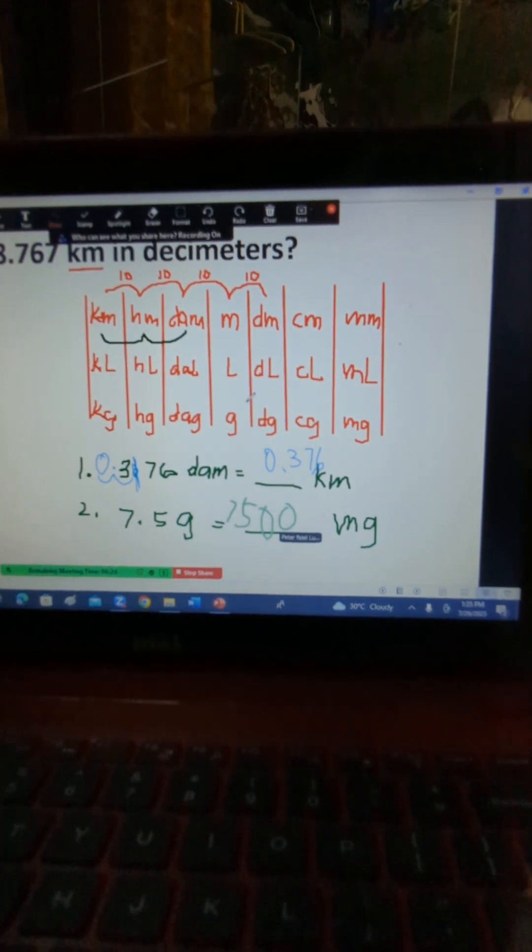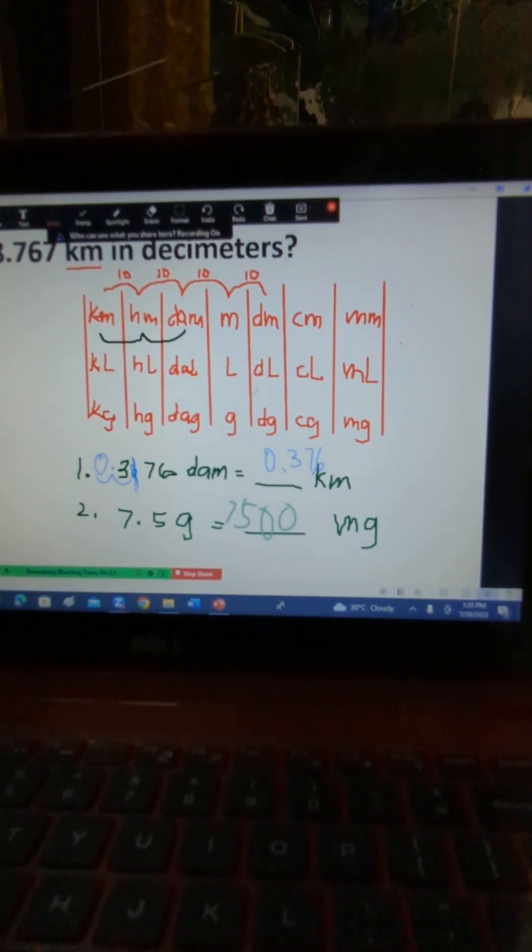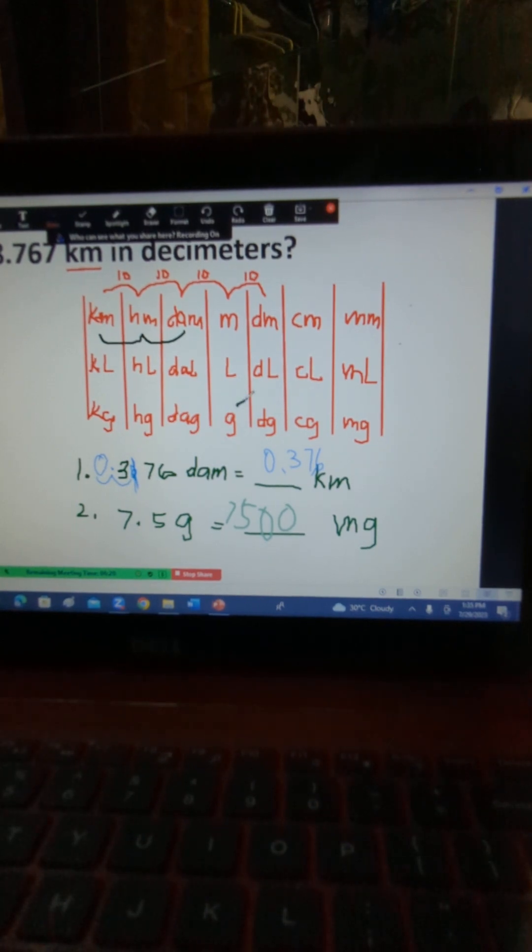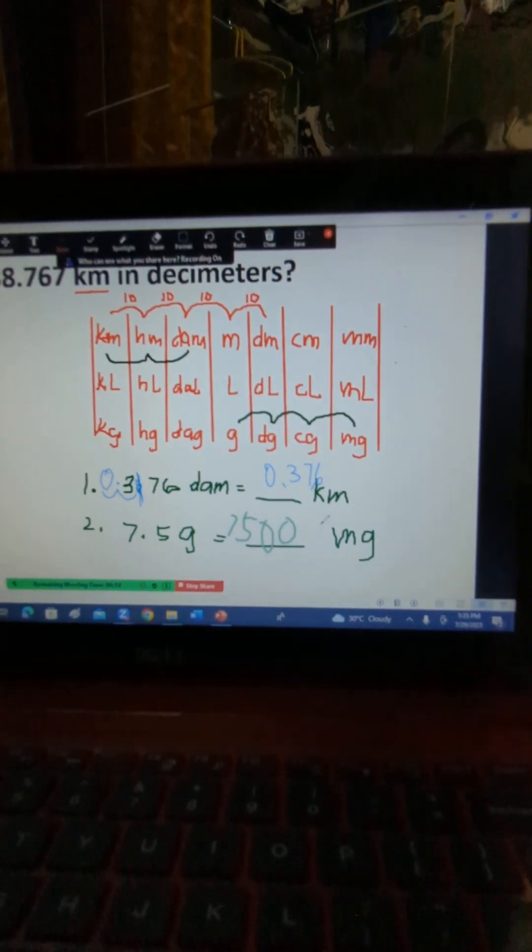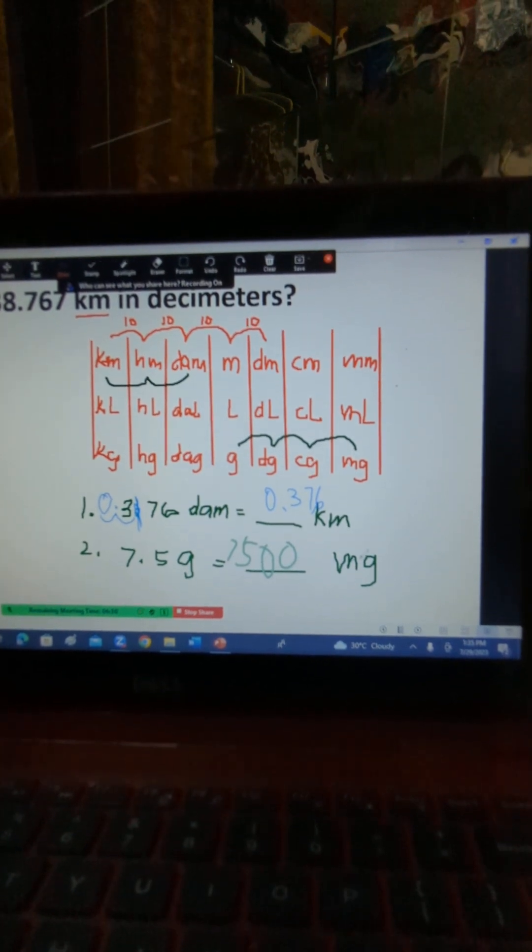Okay, very good. So there are three movements from gram to milligram. From gram to desigram, that's times 10. That's another times 10, and then another times 10. Nakuha? So 7,500 milligram.